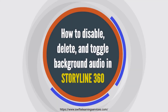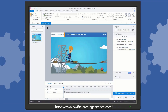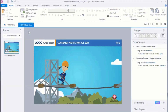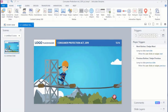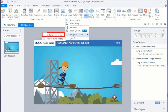How to Disable, Delete, and Toggle Background Audio in Storyline 360. If you want to turn off background audio for your course, follow these steps. Go to the Insert tab on the Storyline ribbon. Click the Audio drop-down arrow. Select Background Audio and choose No Background Audio.